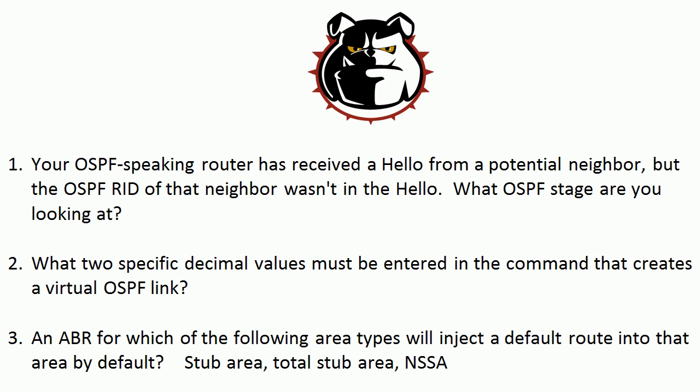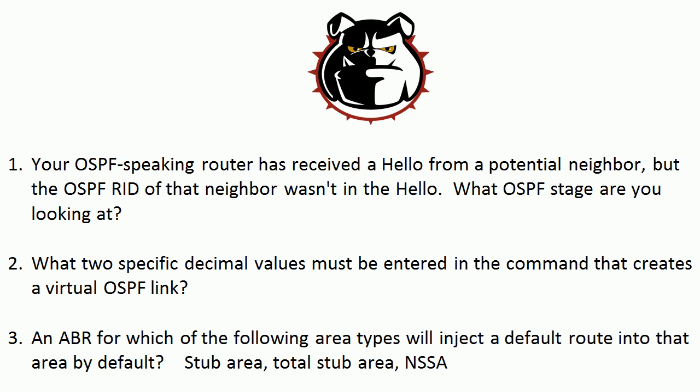Finally, an ABR for which of the following area types will inject a default route into that area by default: a stub area, a total stub area, or an NSSA? I've got some Cisco documentation I'm going to link to in this video that I'd like you to take a look at. Cisco documentation sometimes is like stirring concrete with your eyelashes, I understand, but these are pretty short reads and they are good things to read before you take your Route and T-Shoot exam.